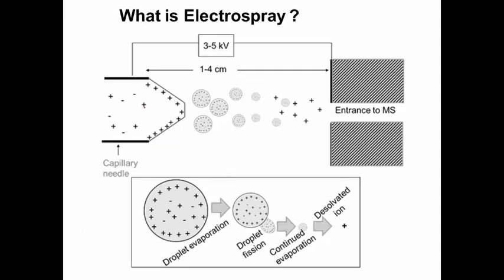If we have our analyte, say M, and then it's protonated, which gives it that positive charge, our needle is going to have a very high positive potential applied to it. If our ions are positive, they're going to be pushed to the other end because they don't like this positive potential. The mass spectrometer itself is going to be held at ground.